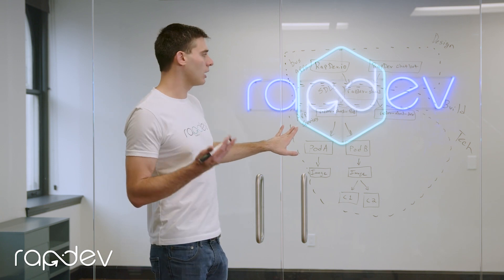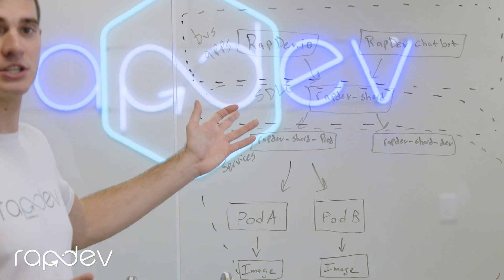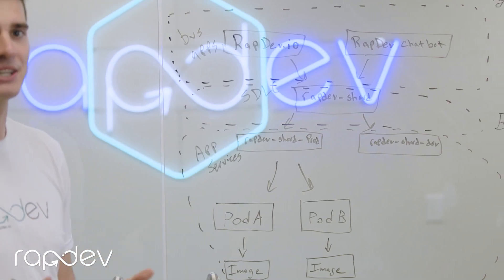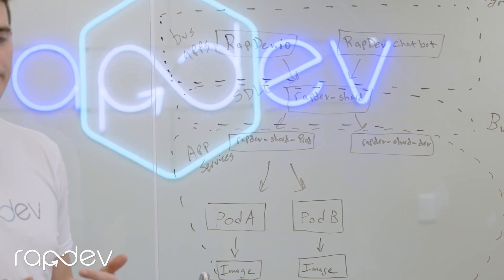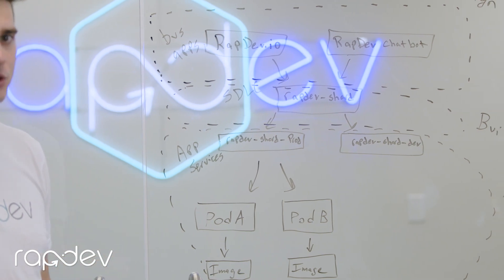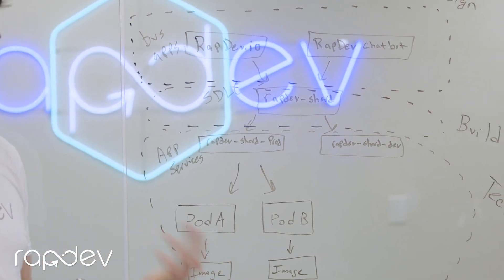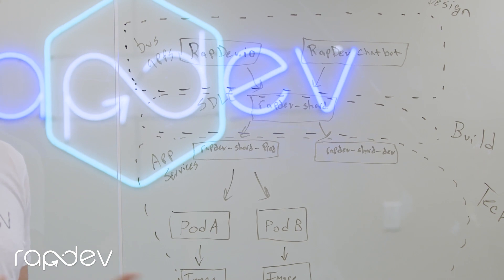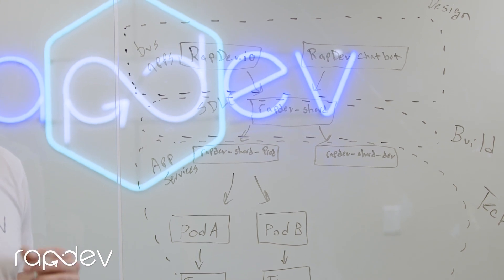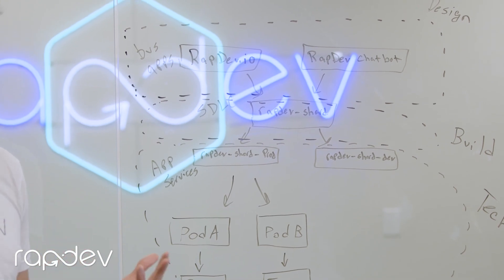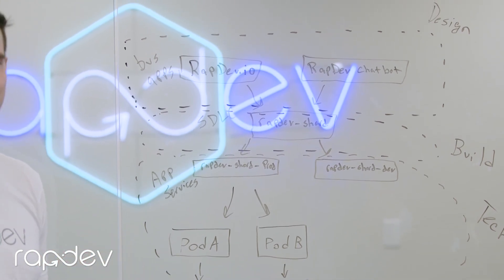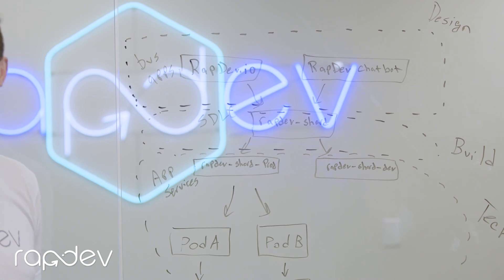Now, a lot of times, since SDLC components — microservices, APIs — are more of a technical nature, they don't get their way into the CMDB because the people who are ultimately responsible for managing them are more on the dev teams and don't really care about ServiceNow.